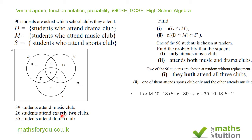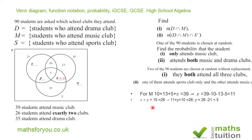For Y, we need the information that 26 students attend exactly two clubs. The regions for exactly two clubs are: X (which is 11), Y, and 10. So X plus Y plus 10 equals 26, and that gives us a Y value of 5.